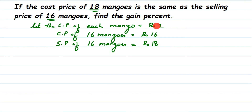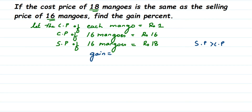Now we have the cost price of 16 mangoes and the selling price of 16 mangoes — the quantity is the same, so we can easily compare. The selling price (18 rupees) is more than the cost price (16 rupees), so it's a profit. Gain equals selling price minus cost price: 18 minus 16 equals 2 rupees.